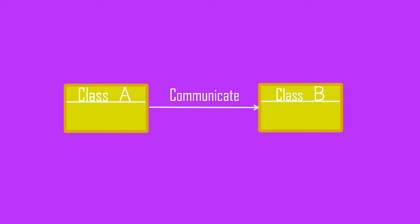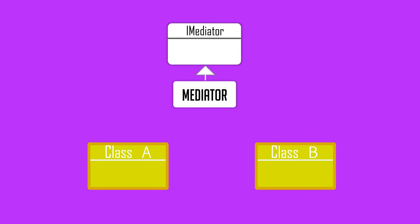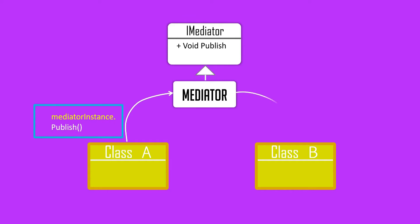Say you have two classes, Class A and Class B, that want to interact with each other. Using the mediator pattern, they will not interact directly — instead, Class A will call a method in the mediator called 'publish', and in turn the mediator will notify all classes interested in receiving messages from Class A by calling a method in Class B — I've named it 'handle'.